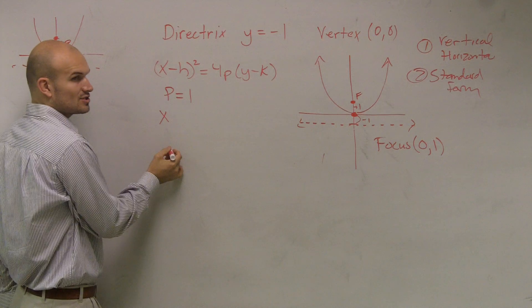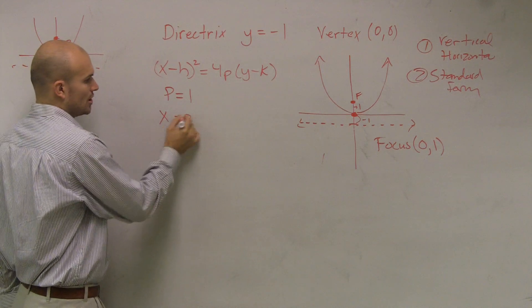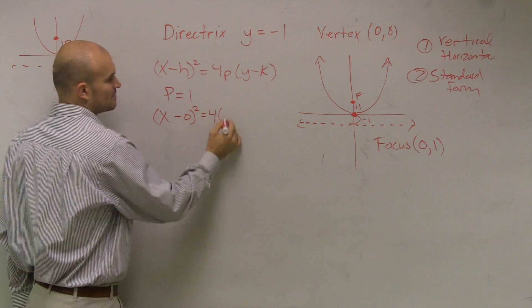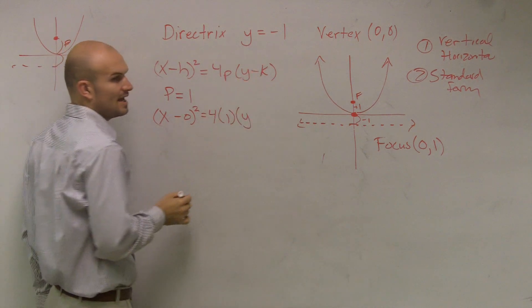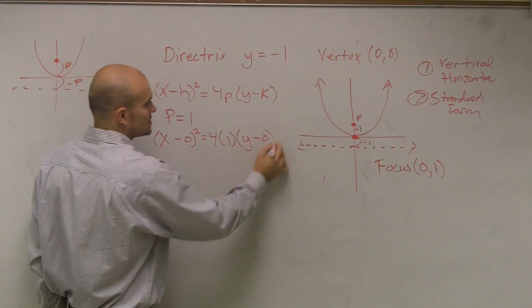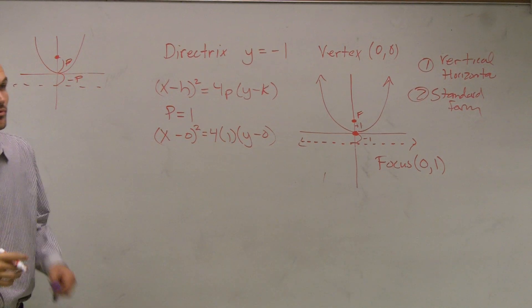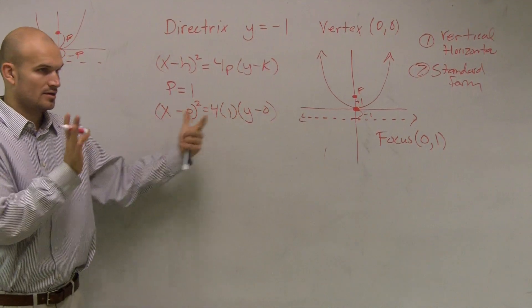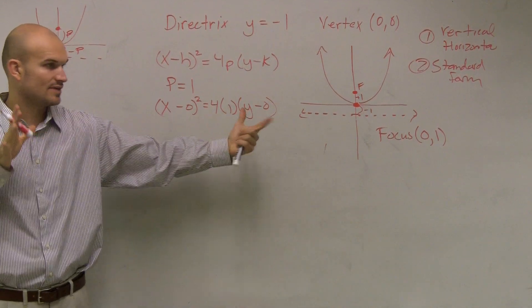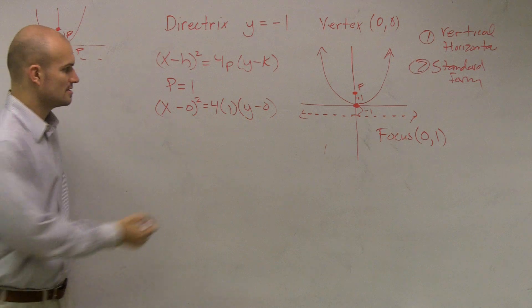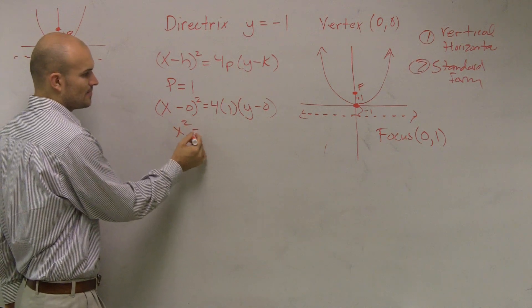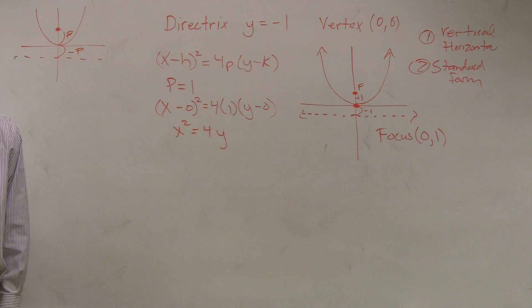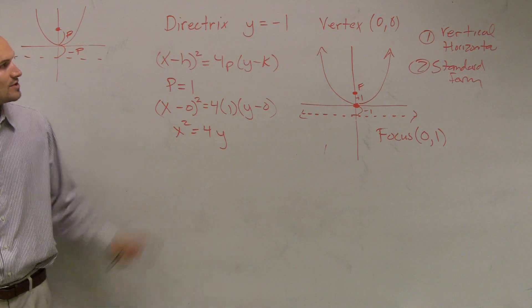h is your x-coordinate of your vertex, which is 0, squared, equals 4 times p is 1, times y minus k, the y-coordinate of your vertex, which is 0. And this actually brings back to your question on number 11. If you expand it out, you can put in those zeros. Because now, we don't need to write x minus 0, it becomes x squared. 4 times 1 is 4, times y. So that's going to be our standard form for this equation.